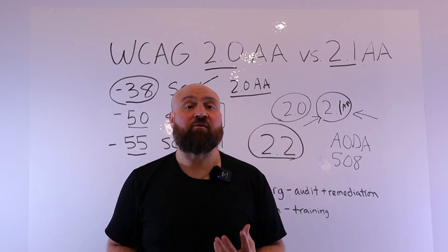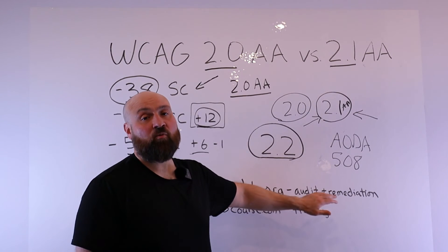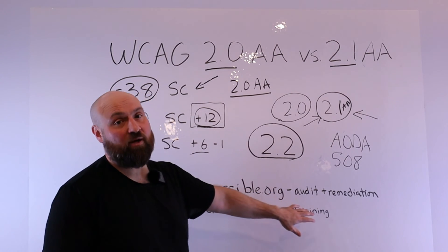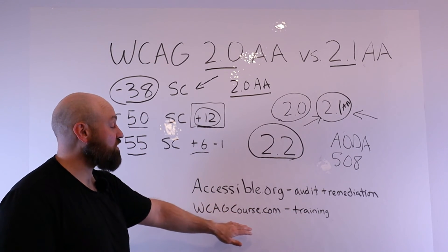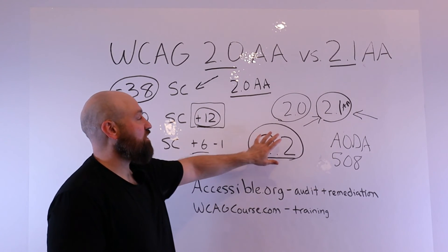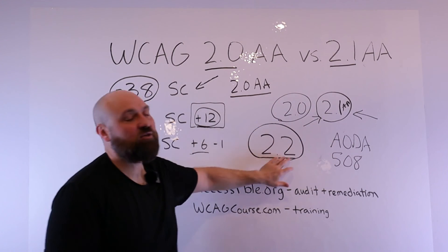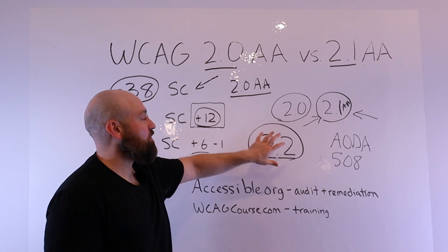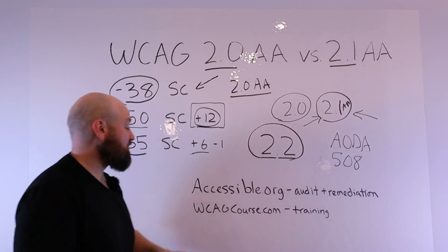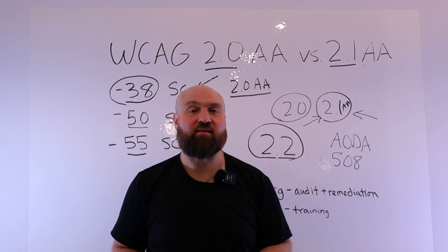How you approach this depends, but now you're aware of the different versions of the web content accessibility guidelines. If you need help with an audit or remediation, at accessible.org we can take care of everything for you. Also, if you would like training on the web content accessibility guidelines, my course — the WCAG course — can help you learn these different success criteria that comprise all of the versions. The course has modules for 2.0, 2.1, and 2.2, so you can approach whichever version you're concerned with first and work from there. That training is available at wcagcourse.com, and I will include links to these resources in the description.